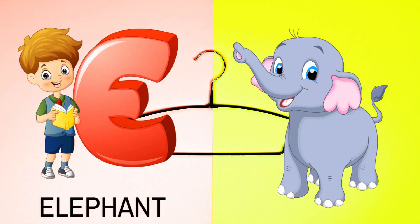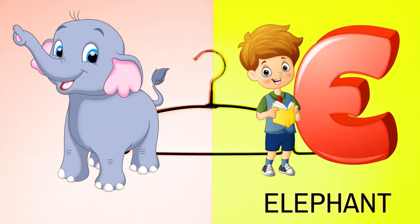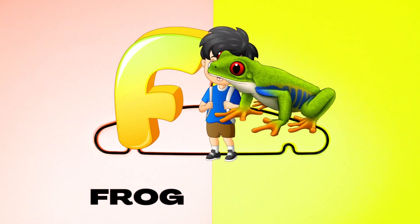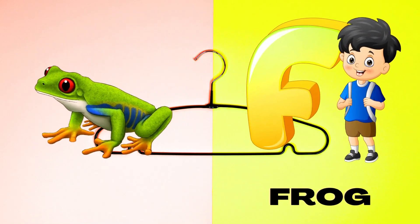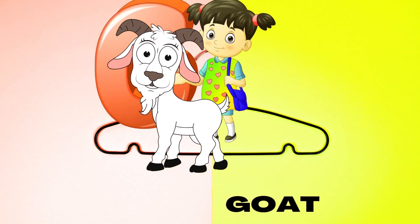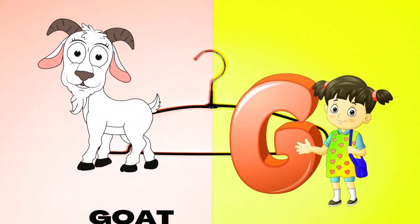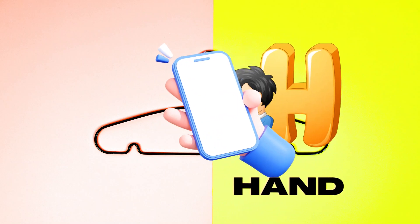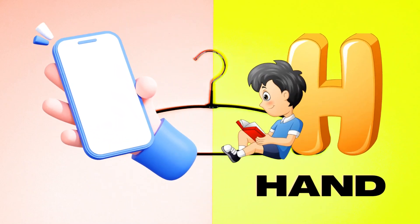E is for Elephant, E-E-Elephant. F is for Frog, F-F-Frog. G is for Goat, G-G-Goat. H is for Hand, H-H-H-Hand.